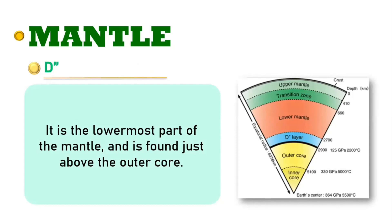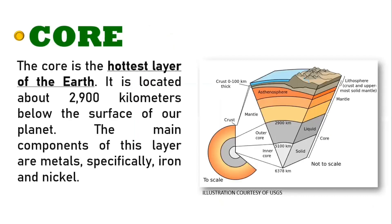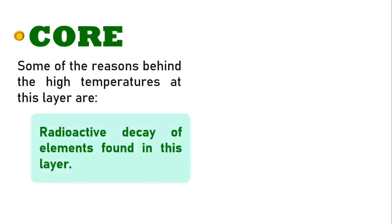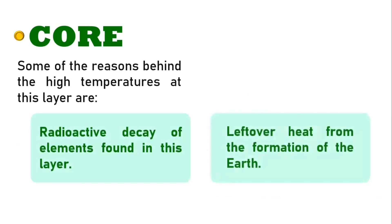The next distinct layer of the Earth is the core. The core is the hottest layer of the Earth. It is located about 2,900 kilometers below the surface of our planet. The main components of this layer are metals, specifically iron and nickel. Some of the reasons behind the high temperatures at this layer are the radioactive decay of elements found in this layer and the leftover heat from the formation of the Earth.